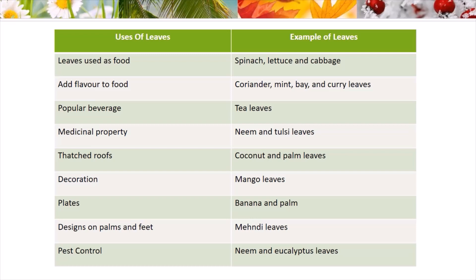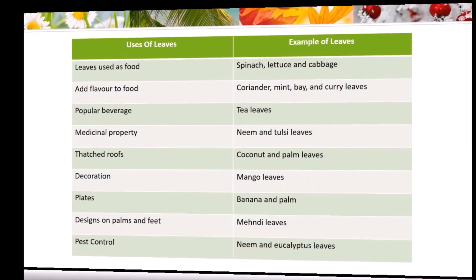Let us summarize the uses of leaves and their examples. Leaves used as food: spinach, lettuce, and cabbage. Leaves that add flavor to food: coriander, mint, bay, and curry leaves. A popular beverage leaf: tea leaves. Leaves with medicinal property: neem and tulsi. Leaves used for thatched roofs: coconut and palm leaves. Leaves used for decoration: mango leaves. Leaves used as plates: banana and palm leaves. Leaf used for designs on palms and feet: mehndi leaves. Leaves used for pest control: neem and eucalyptus.